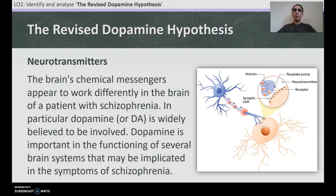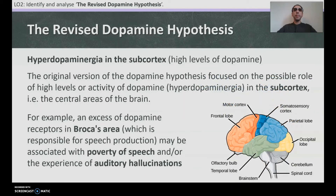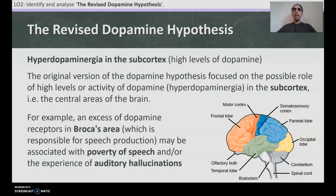The brain's chemical messengers appear to work differently in the brain of a patient with schizophrenia — in particular dopamine. Dopamine is involved in the functioning of several brain systems implicated in the symptoms of schizophrenia. The original version of the dopamine hypothesis focused on hyperdopaminergia in the subcortex — high levels of dopamine in the central areas of the brain. For example, an excess of dopamine receptors in Broca's area, which is responsible for speech production, may be associated with poverty of speech and auditory hallucinations — both positive symptoms.